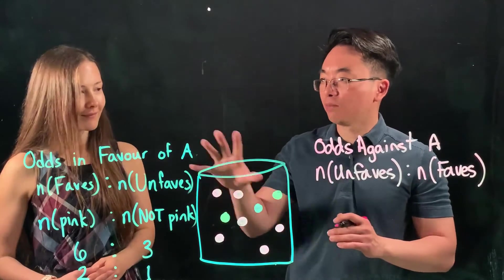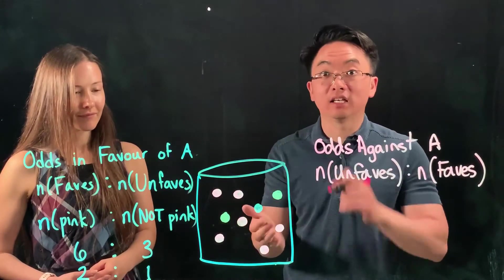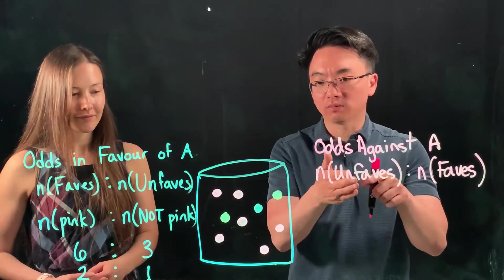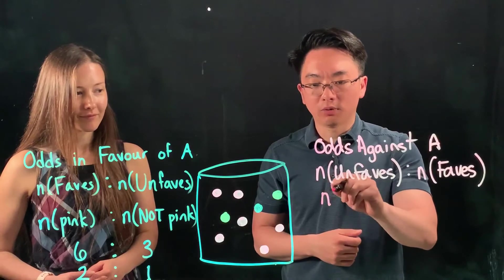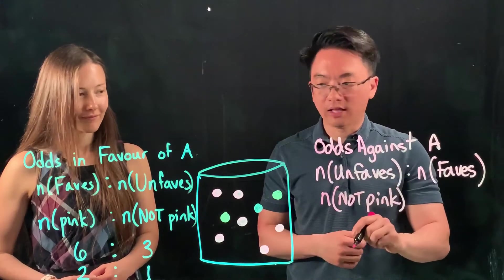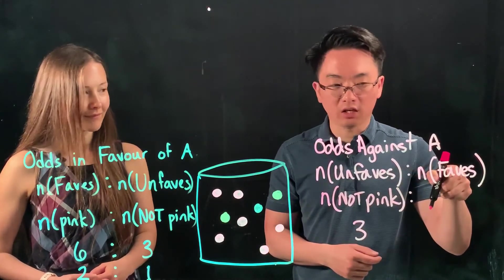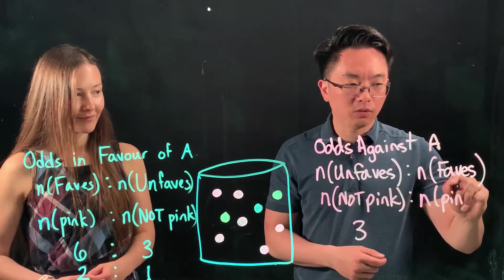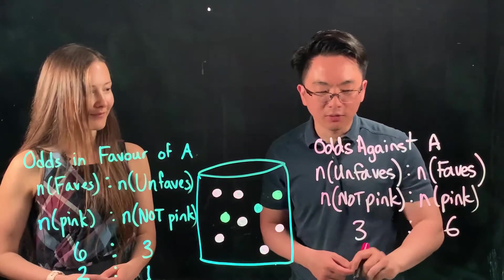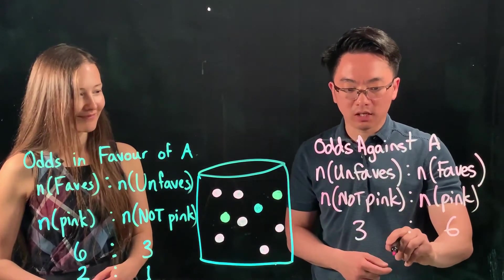But if I didn't have the option of piggybacking off of the odds in favor, then I would just do the same thing that Dana did, which is go in here and count, first of all, the unfavorable events. So we're going to count the number of not pink, and that would be three, versus the number of pink, and that would be six. That's a little spread out there, but here we go. So then I can reduce that, and that becomes one to two.